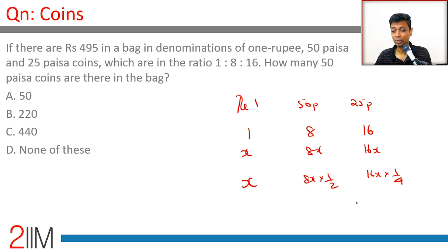25p is 1/4th of a rupee. So x + 4x + 4x = 495, which gives 9x = 495.